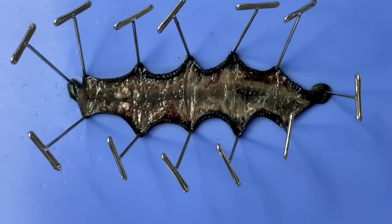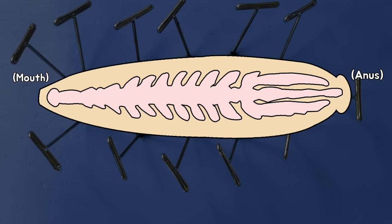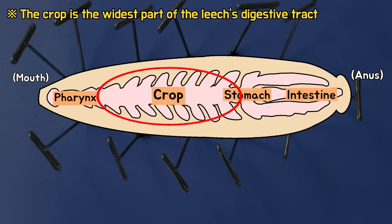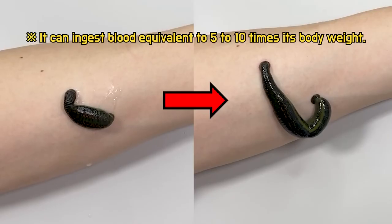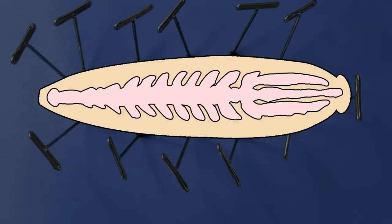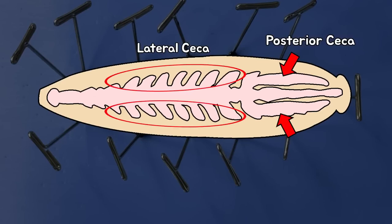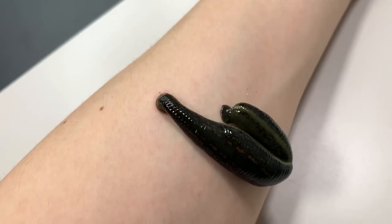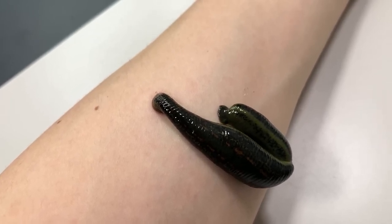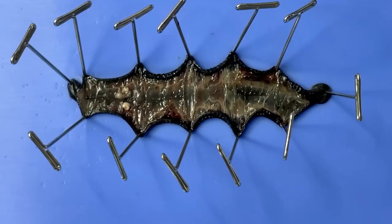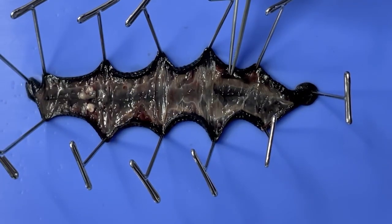Next, their digestive tract runs straight from the mouth to the anus. The crop is the part where food is temporarily stored. The leech's crop has great elasticity, allowing it to consume a large amount of blood at once. And the consumed blood can be stored in the lateral and posterior ceca, allowing them to survive for up to a year without eating anything after a proper blood meal. This leech has been fasting for a long time, and there is almost nothing inside the digestive tract. However, you can see that there is still a little blood left here in the posterior ceca.